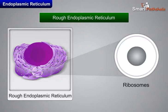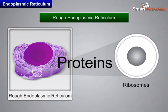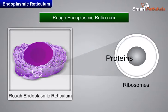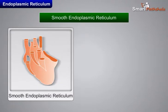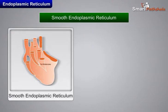The manufactured proteins are then sent to various places in the cell depending on need, using the ER. The smooth endoplasmic reticulum (SER) helps in the manufacture of fat molecules, or lipids, which are important for cell function.